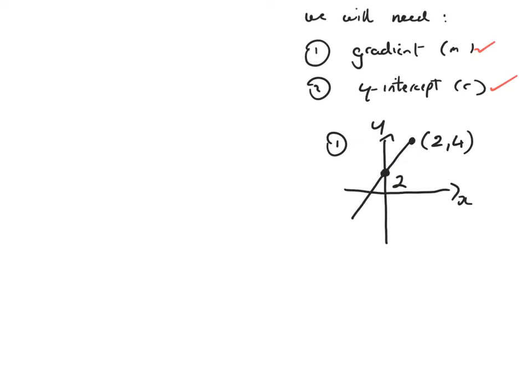Now, the first thing we need to do is to establish what the two points are. There's the first point and there's the second point. The first point — I appear to only have one coordinate, but I can work out the second coordinate easily. Remember that when you've got an x and a y-coordinate, the x-coordinate is along and the y-coordinate is up and down. Starting at the origin, to get from the origin to 2, we don't move along at all, so this x-coordinate would be 0, but we move up to y-coordinate 2. So the point is (0, 2). Let's label the coordinates: x1, y1, x2, y2.